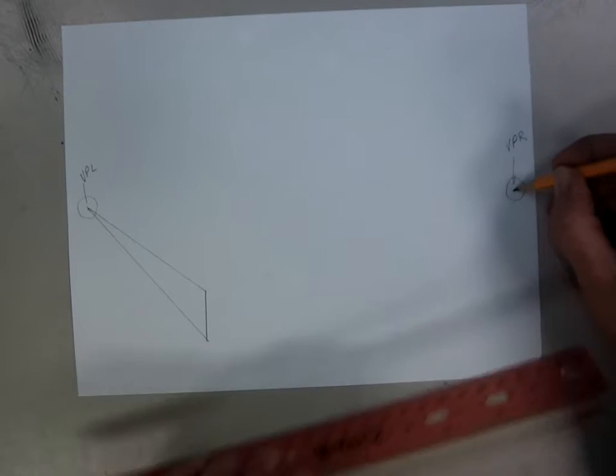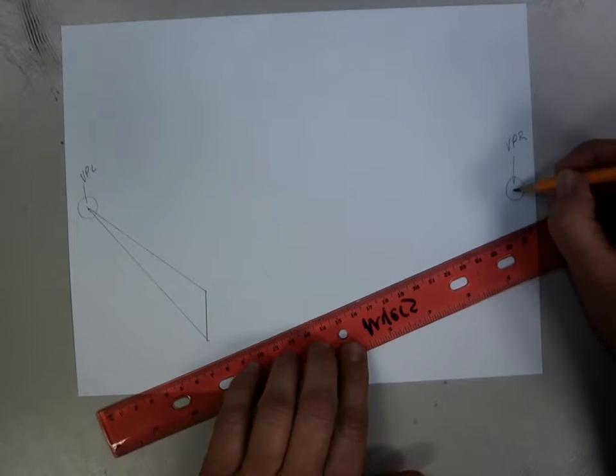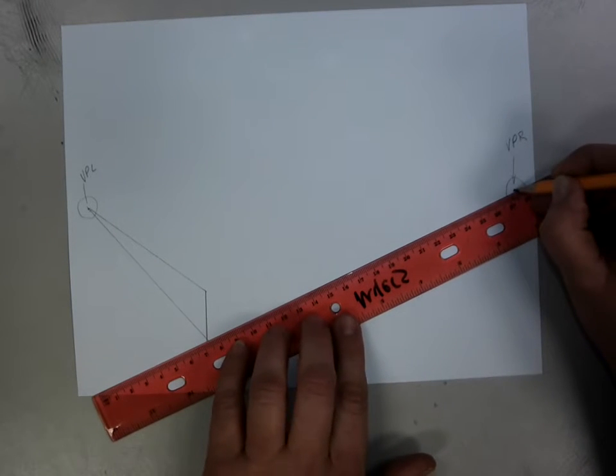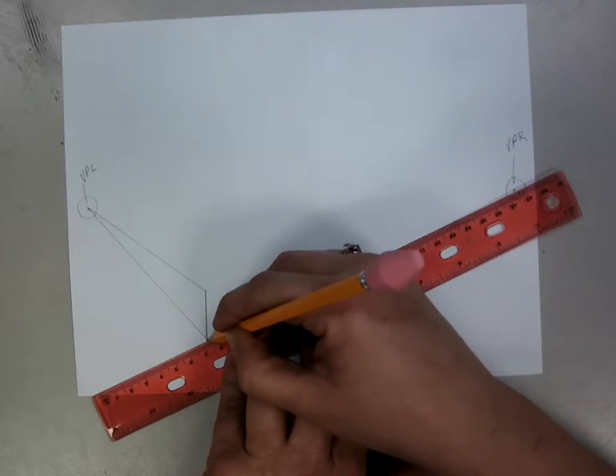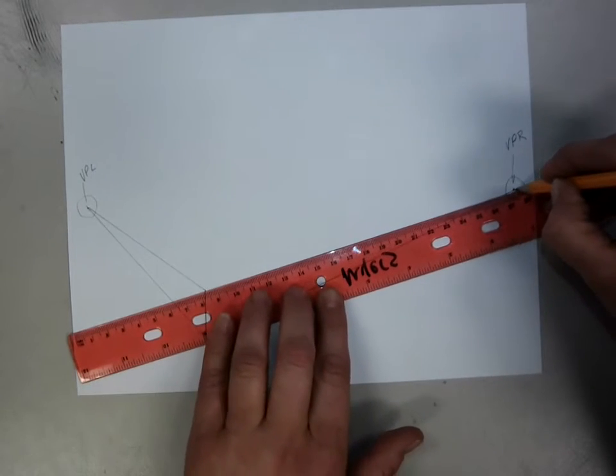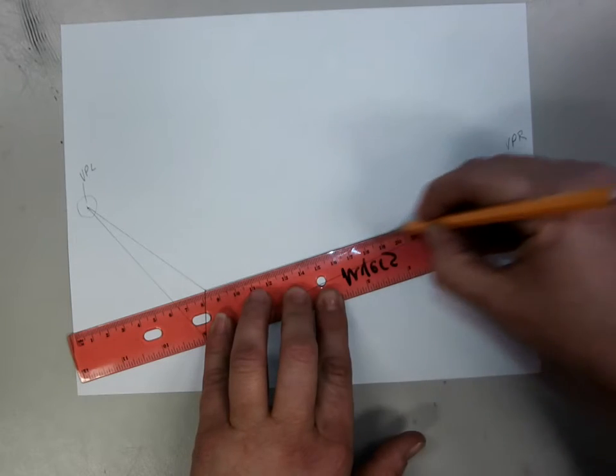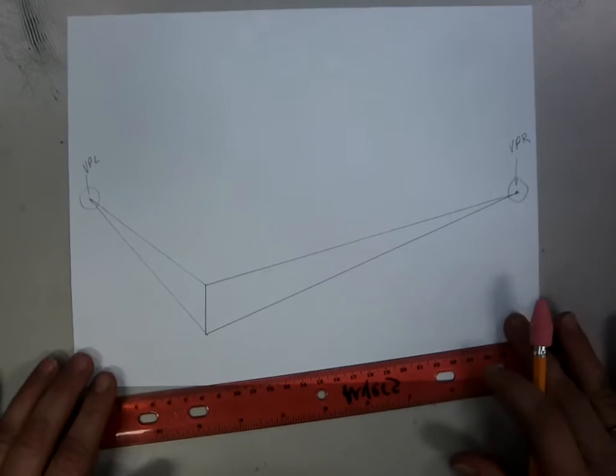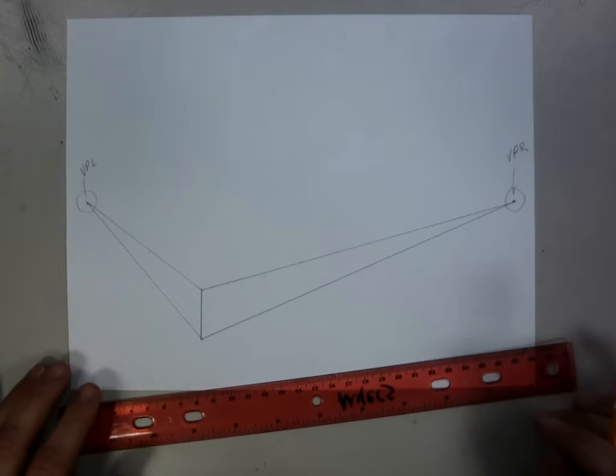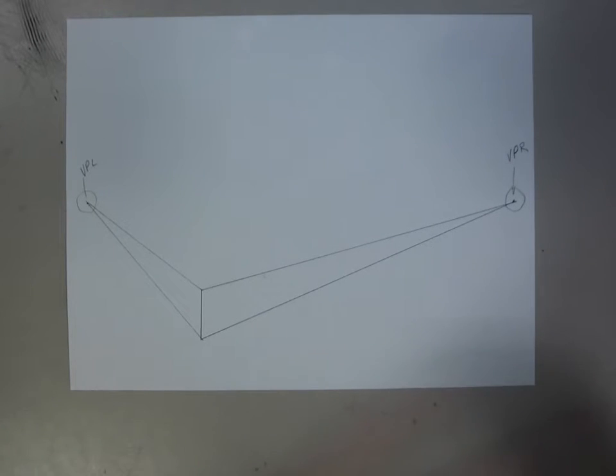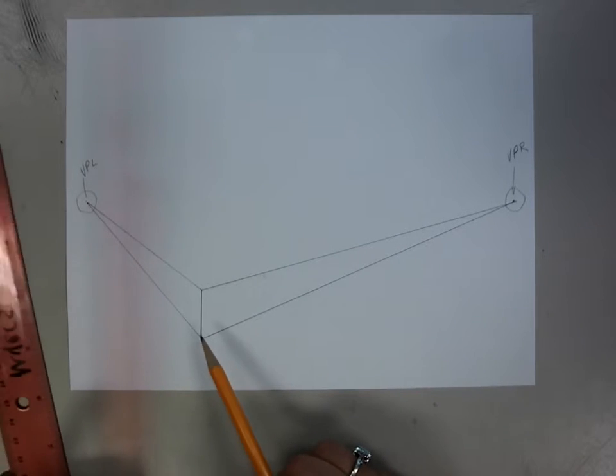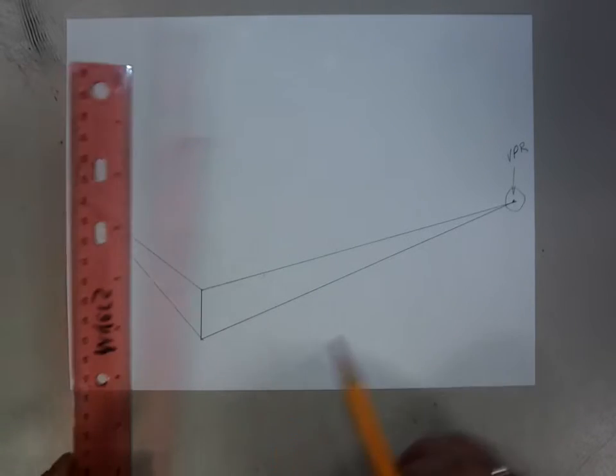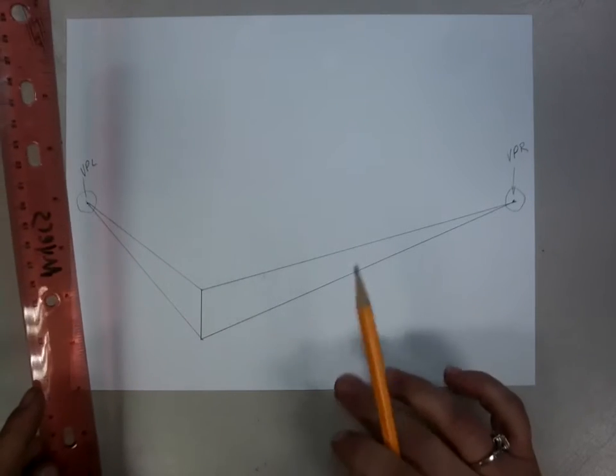On this one I'm going to draw them all the way to the vanishing point so you can see it. On the next one I may not take them all the way. So now I have two walls going all the way into the distance. I probably don't want my box or my building to be that big. So I'm going to use a parallel line that's parallel to the original corner in order to shorten the box into a smaller size.